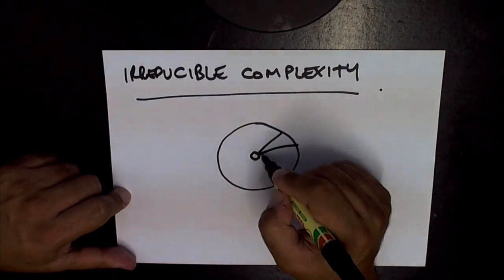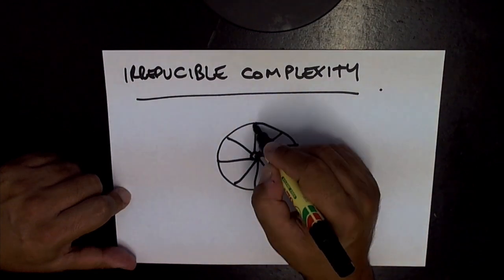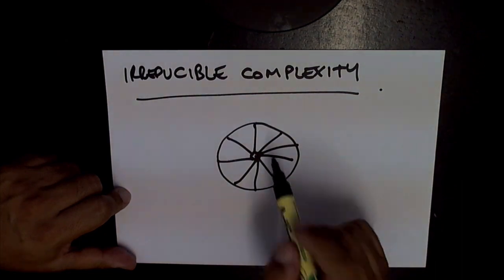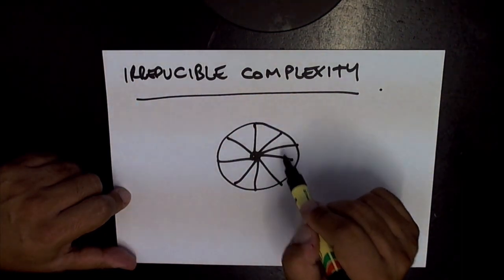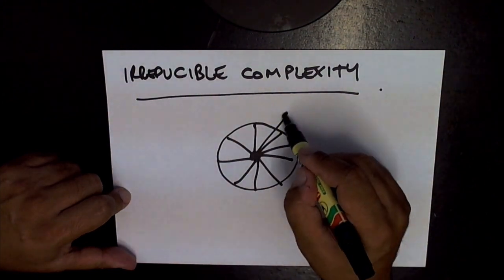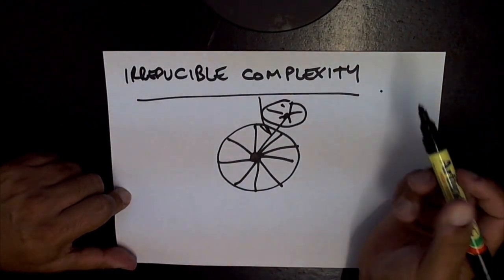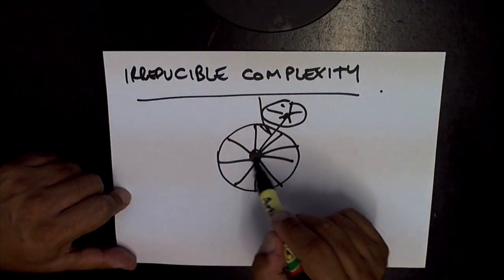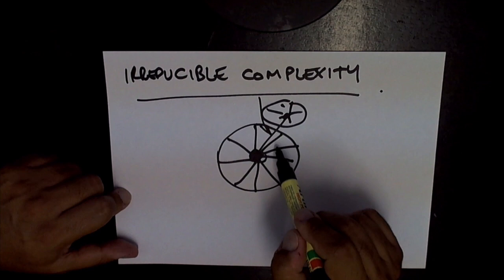If the wheel doesn't have the hub, then you can't attach the spokes to the rim. So the rim is irreducibly complex, the hub is a necessity, you've got the spokes, and it also needs an axle which goes through to the other wheel over here. You need the outer rim, the spokes, the hub, and the axle - that's irreducibly complex.